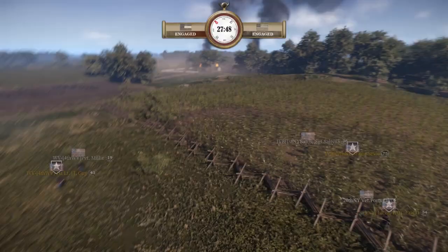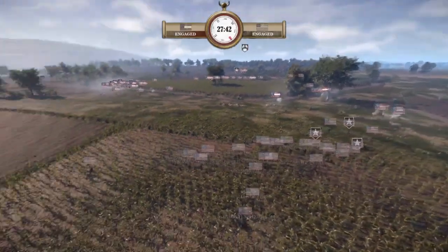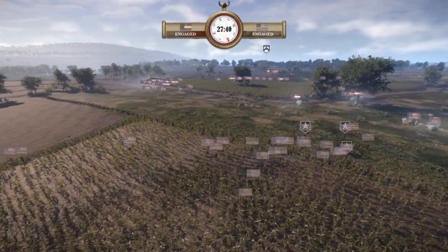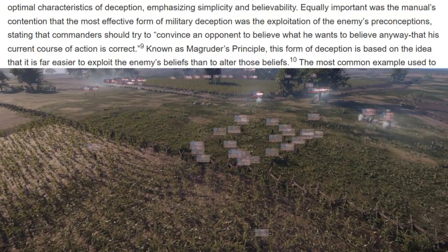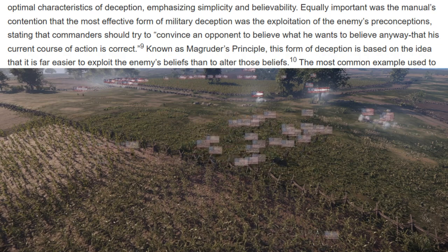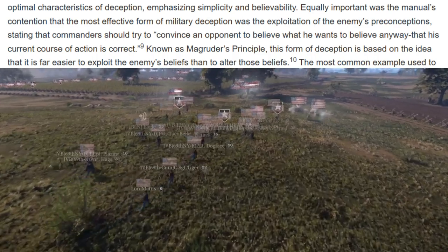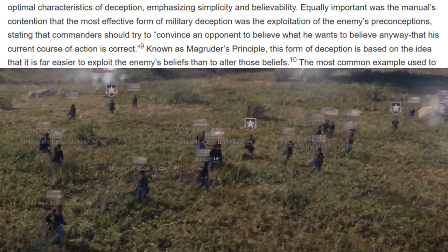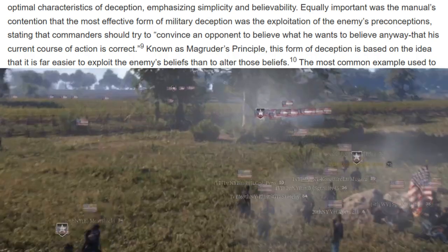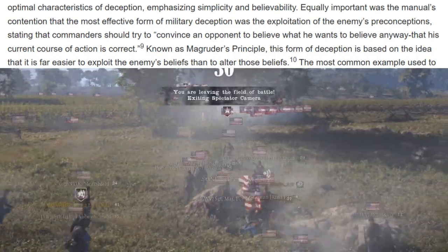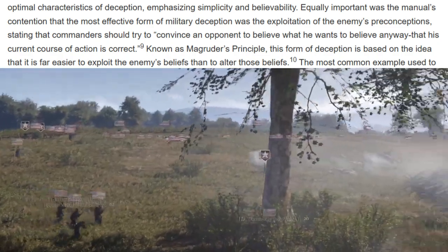An important concept when conceiving of deception operations is known as Magruder's Principle. Quoting from Donald P. Wright — link in the description — the most effective form of military deception was the exploitation of the enemy's preconceptions, stating that commanders should try to convince an opponent to believe what he wants to believe anyway, that his current course of action is correct. Known as Magruder's Principle, this form of deception is based on the idea that it is far easier to exploit the enemy's beliefs than to alter those beliefs.